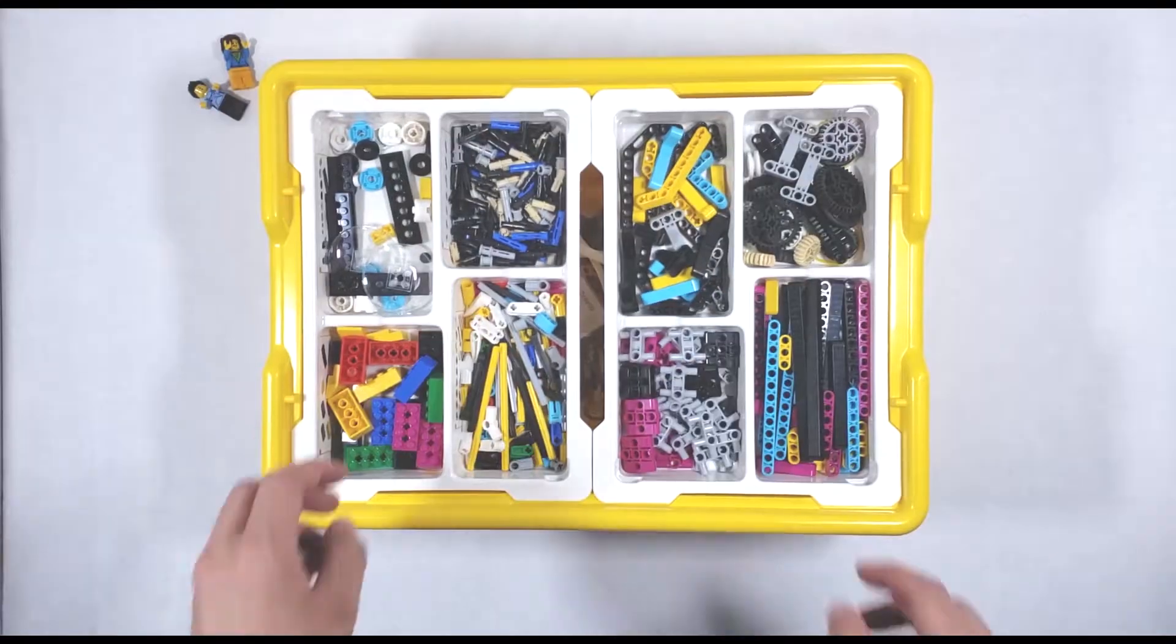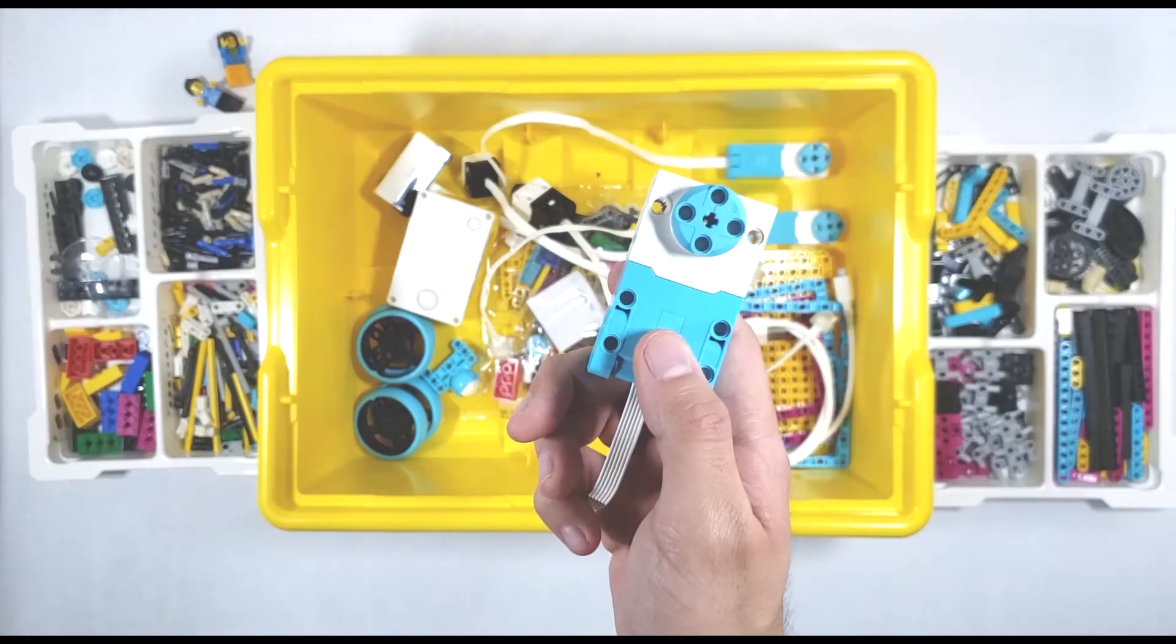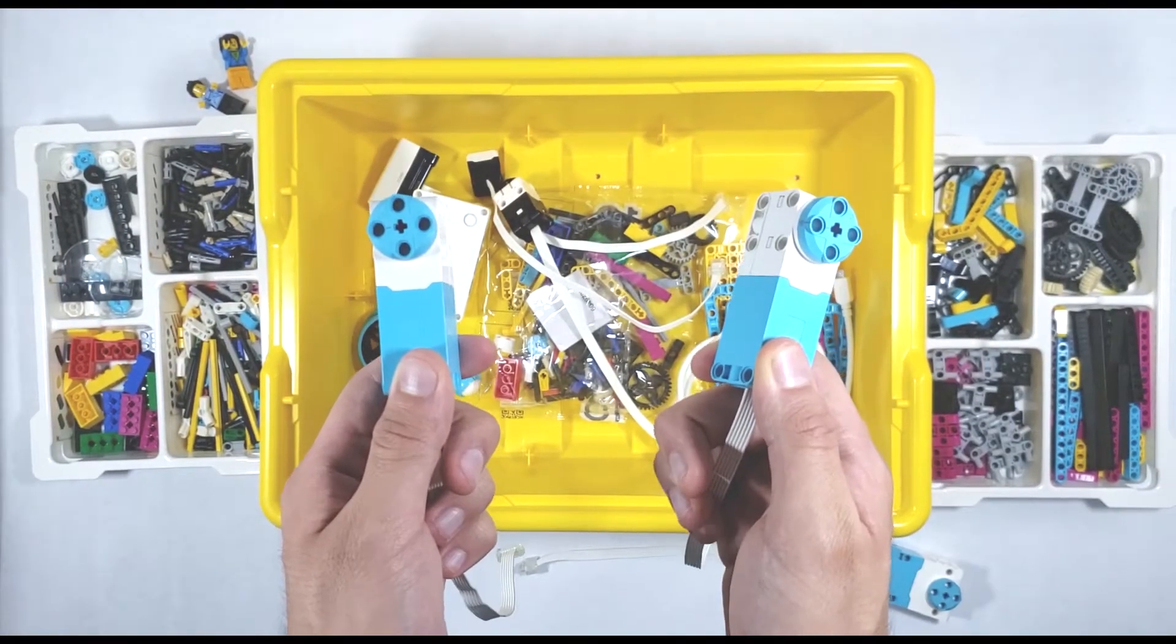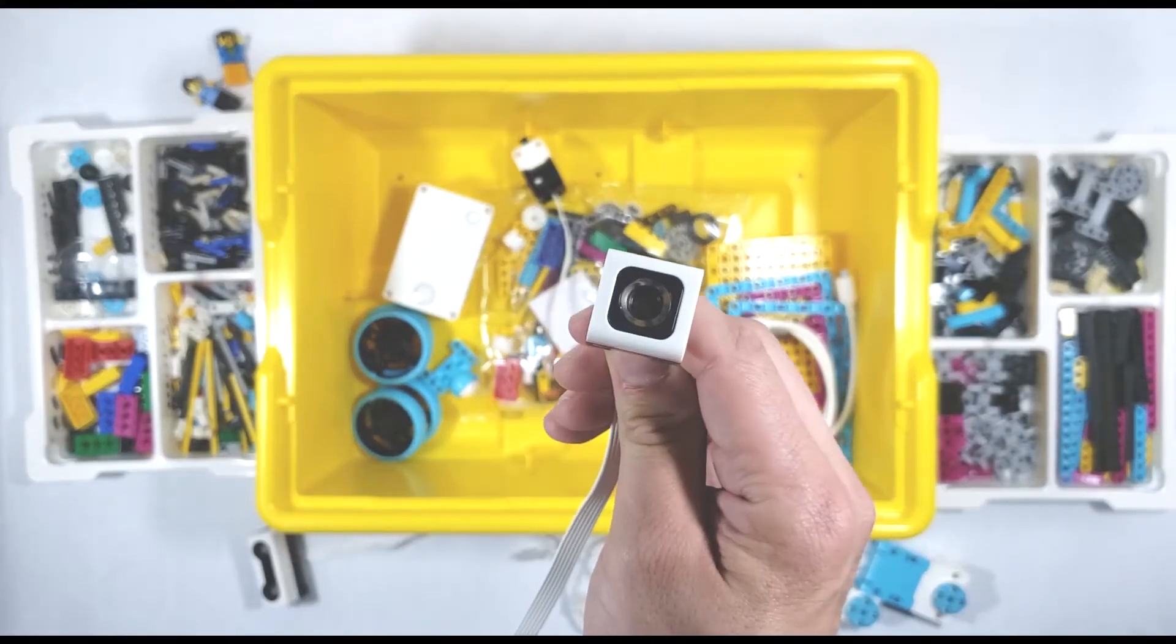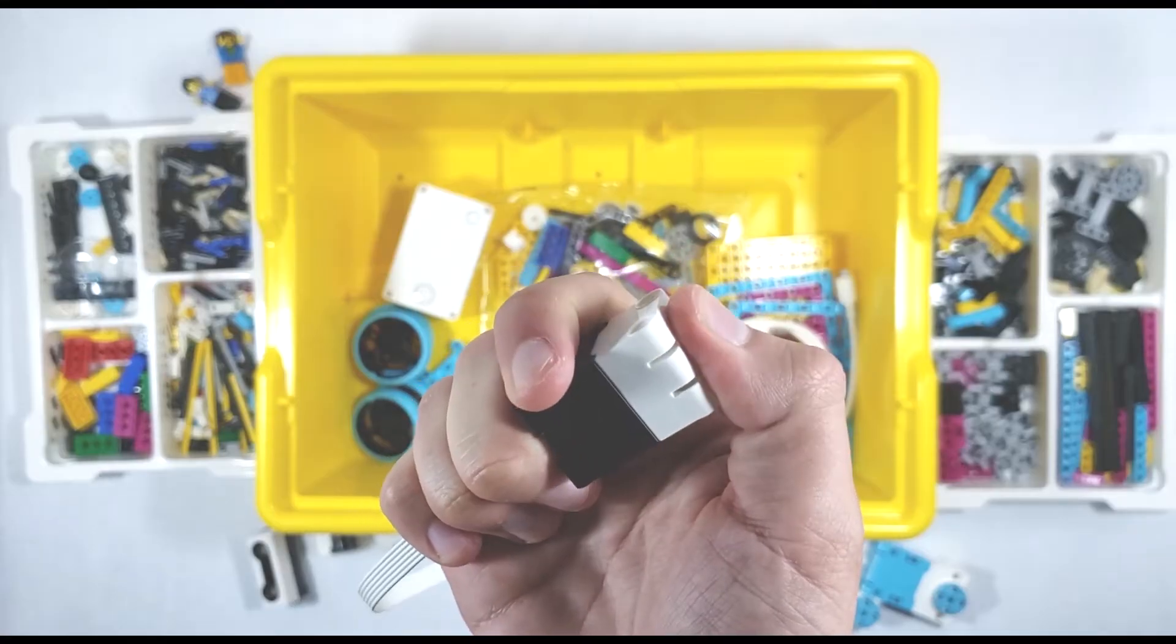If you remove the trays, you'll find the larger components at the bottom of the box. The Spike Prime kit comes with one large motor as well as two medium motors. And for sensors, there's one distance sensor, one color sensor, and one force sensor that can actually detect the amount of force being applied in newtons.